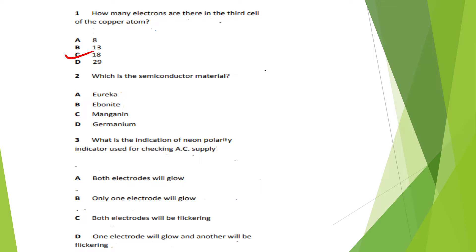Question 2: Which is the semiconductor material? Options: Eureka, Ebonite, Manganin, Germanium. The answer is Option D — Germanium.